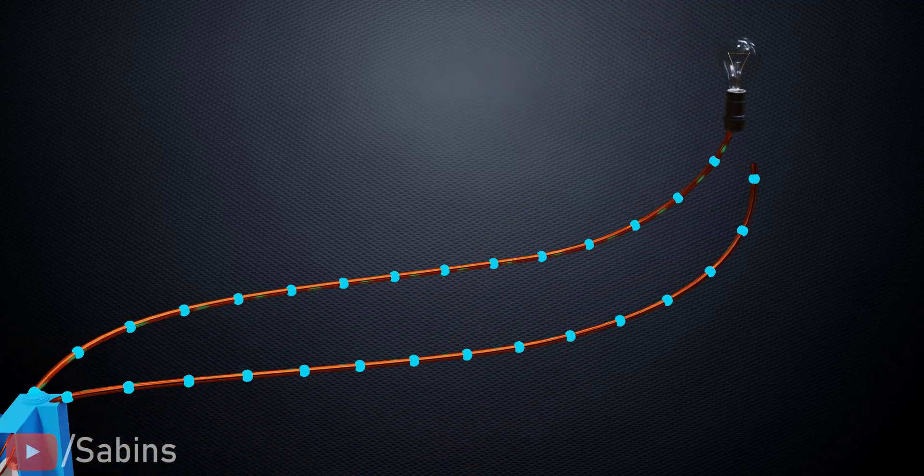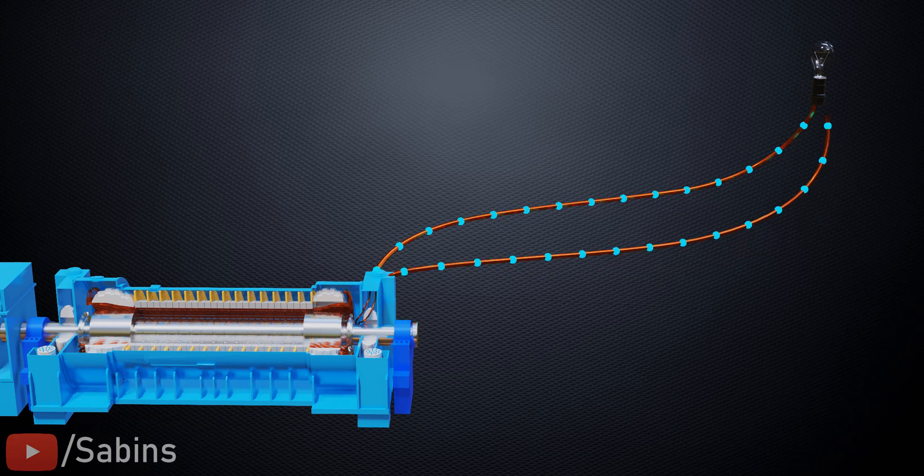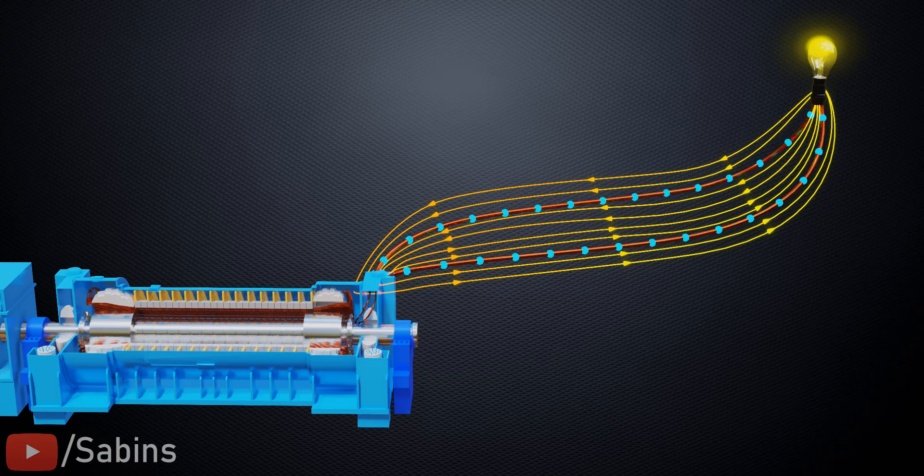Electric fields travel at the speed of light, which means as soon as you close the circuit, the electric field will be established around the bulb region almost instantly, and electrons near that region flow into the bulb.